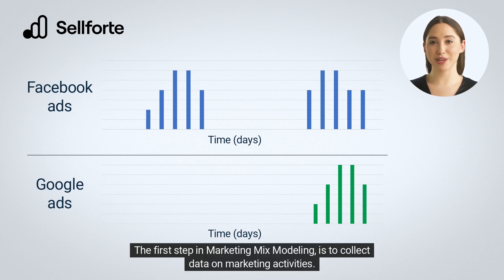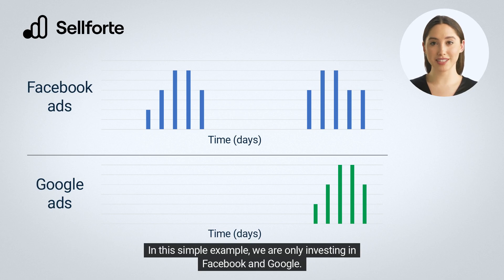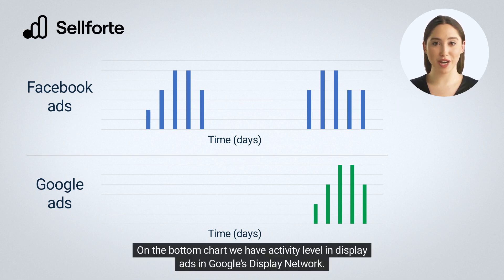The first step in marketing mix modeling is to collect data on marketing activities. In this simple example, we are only investing in Facebook and Google. On the top chart, we have our activity level in display ads in Facebook. On the bottom chart, we have activity level in display ads in Google's display network.